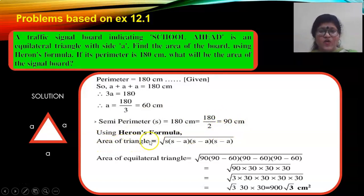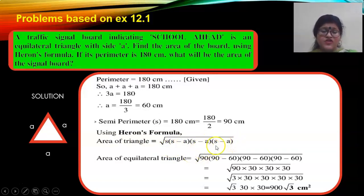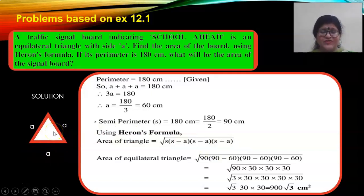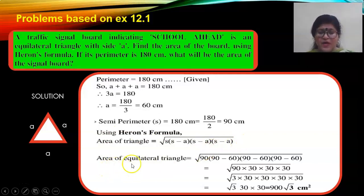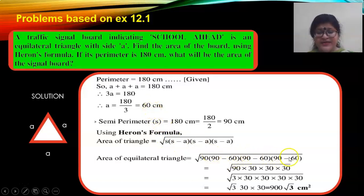Use Heron's formula to find the area: square root of S(S minus A)(S minus A)(S minus A), since B and C values are the same as A in an equilateral triangle. Substitute S as 90 and A as 60: square root of 90 into (90 minus 60) into (90 minus 60) into (90 minus 60), which gives root of 90 into 30 into 30 into 30.